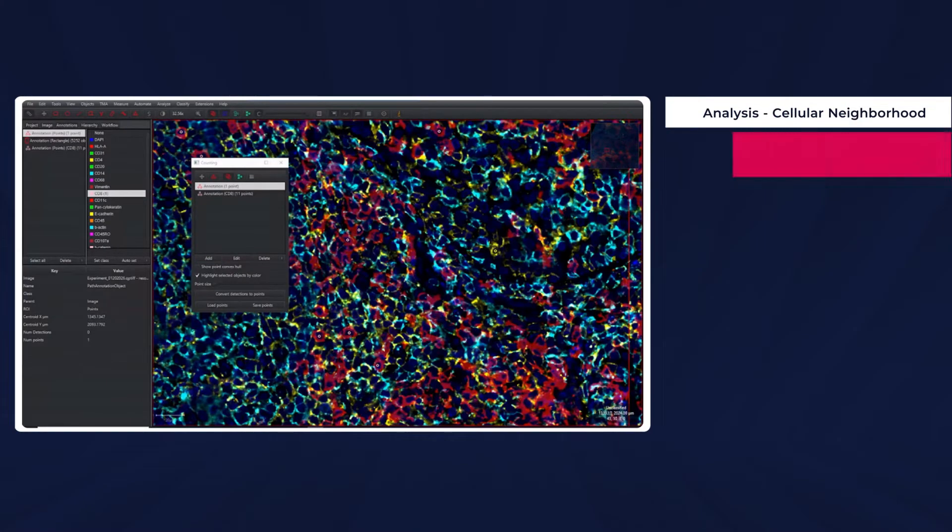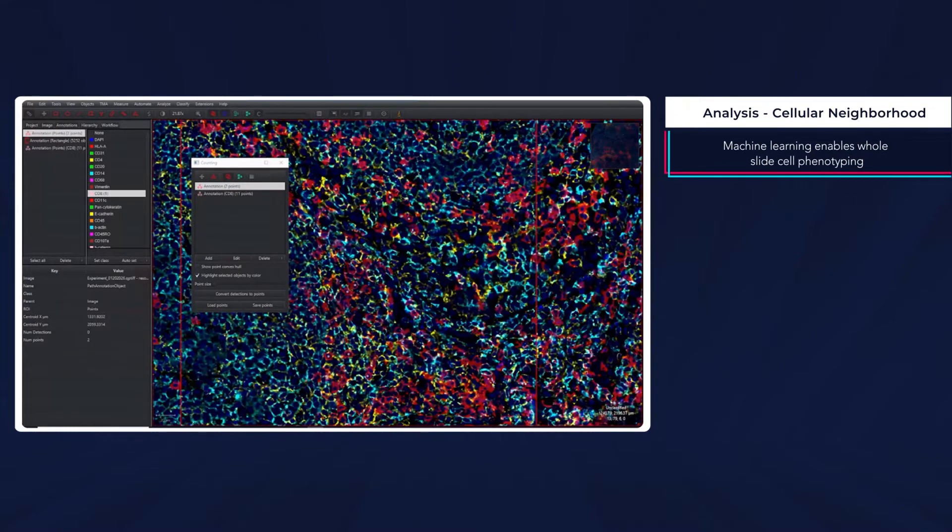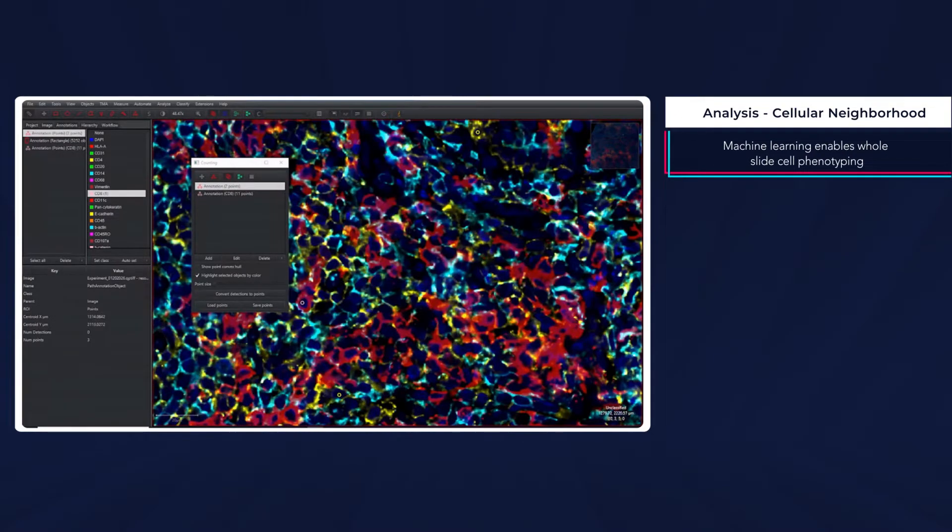Machine learning can be used to teach the computer how to recognize cell types of interest. This process is capable of whole-slide analysis and is user-friendly.